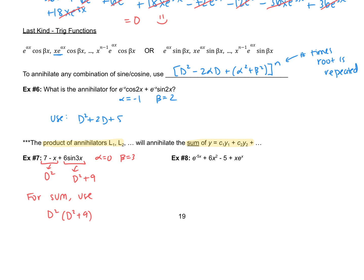In the next example, we have three terms: e^(−5x) has root −5, so its annihilator is D + 5. The middle term x²·e^x has a root of 1 repeated three times, giving annihilator D³. Wait — the middle term is a polynomial: for that we get D³. The last term x·e^x has root 1 repeated twice, so its annihilator is (D − 1)².